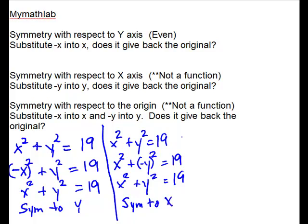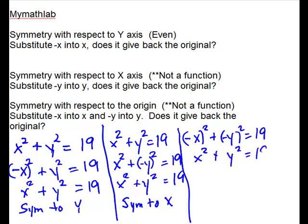If you're looking for symmetry to the origin, do them both. So we will substitute negative x and negative y, and it gives back the original. So this is symmetric to the origin. And that is just to help you out with the MyMathLab problems. But you don't have this page in your packet.